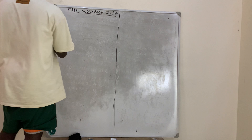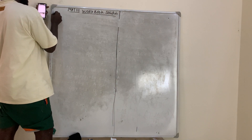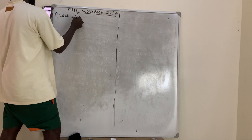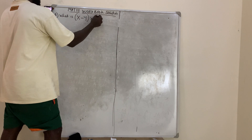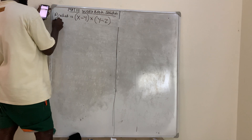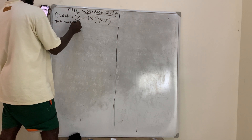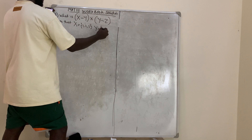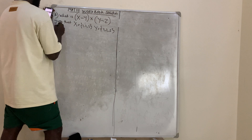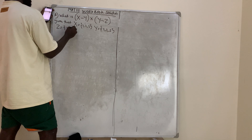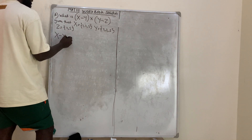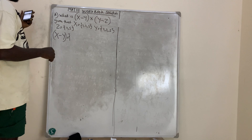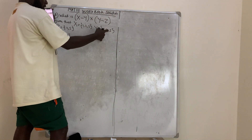Question number 32: What is (X minus Y) cross (Y minus Z)? Given that X = {1, 2, 3}, Y = {2, 3, 5}, and Z = {2, 5}. First we need X minus Y — anything that is in X but not in Y. One is in X and not in Y, so we pick 1.